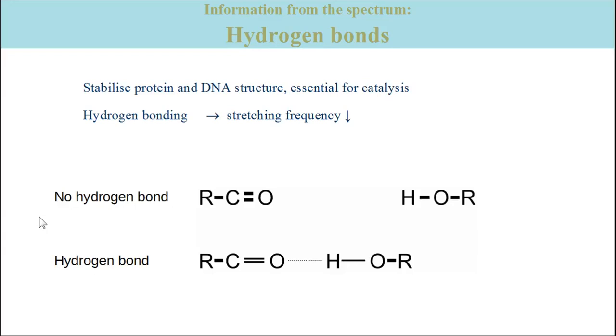When the two groups form a hydrogen bond, part of the electron density in the bonds is transferred into the hydrogen bond as shown here. This makes the bonds weaker as indicated by the thinner lines and longer. Weaker bonds have smaller force constants and therefore the vibrational frequency of stretching vibrations decreases when a hydrogen bond is formed.